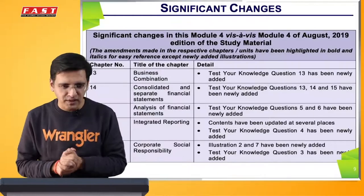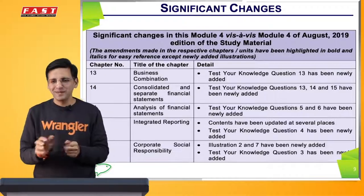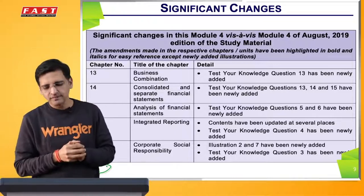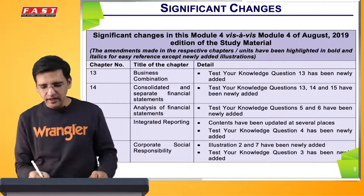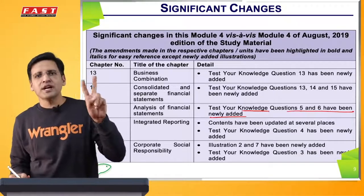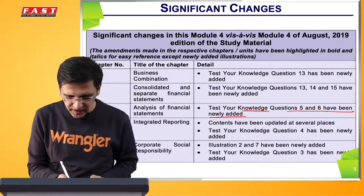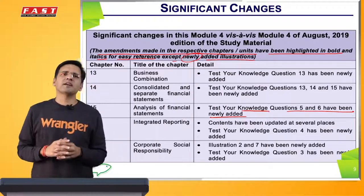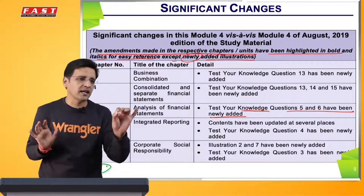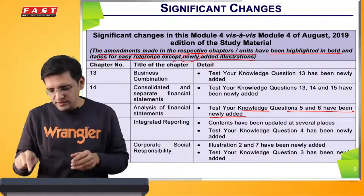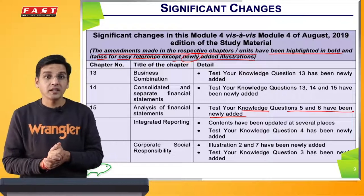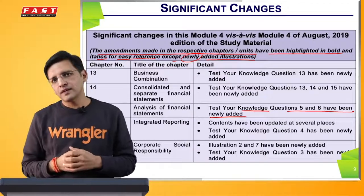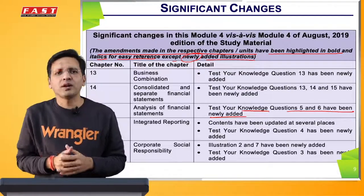And we reviewed every page of the study material. Humne module 4 se shuruwat ki - wahi se, peechhe se paper solve karne waale bacche hain. To module 4 mein humne dekha ki analysis of financial statements ka chapter hai jismein institute ne kaha: 'Test Your Knowledge question 5 and 6 have been newly added.' So, to sach dekha jaaye to institute was very clear ki sirf do questions add karne ki inhone baat ki - TYK 5 and 6. Aur unhone kaha ki the amendments which have been made in respective chapter units have been highlighted in bold and italics for easy reference, except newly added illustrations. So unhone kaha ki iske alaawa agar koi bhi changes hain to humne use bold aur italics mein highlight kiya hai.